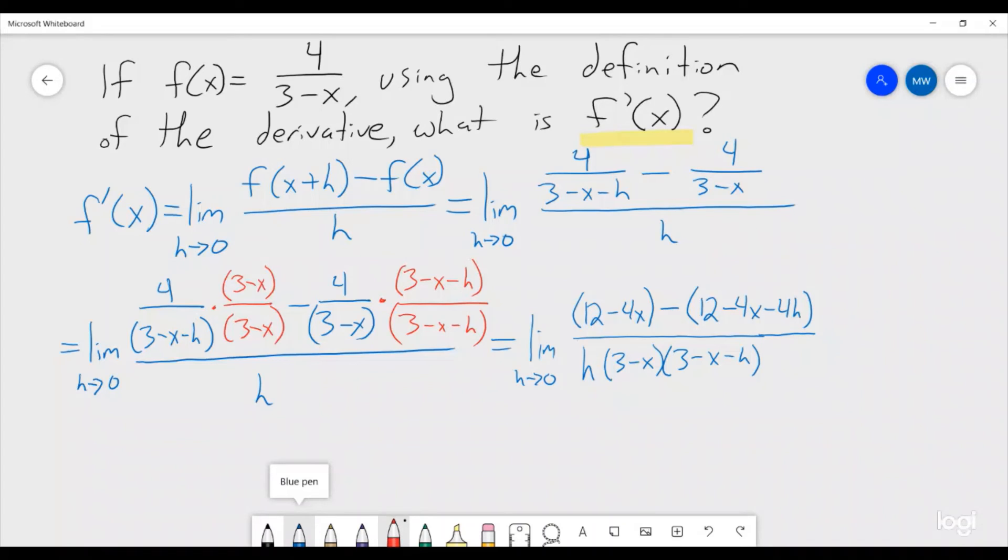And now, I'm going to distribute that minus sign all the way through. Then, notice that some of these terms cancel. 12 and minus 12, minus 4x plus 4x. And all we're left with is 4h.